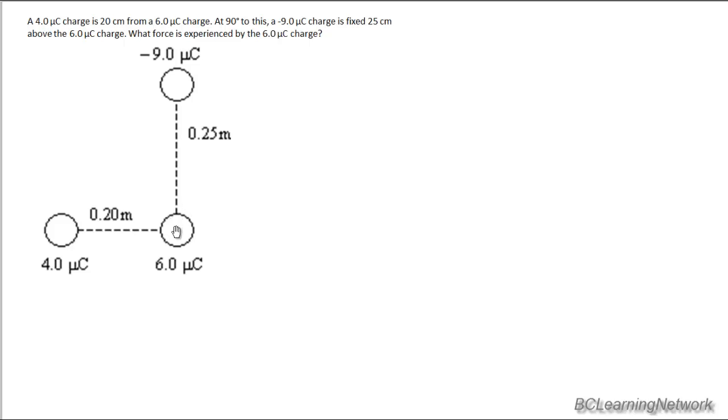So to start the question, once again we do our free body diagram and label all the forces acting on the 6 microcoulomb charge. If you like, you can imagine the other two charges are nailed down. They're not going to move, and we're going to try and figure out which way the 6 microcoulomb charge would move in this arrangement. That's what's meant by the net force. Which way is the overall force pushing on the 6 microcoulomb charge?